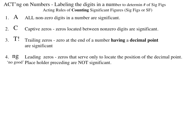C stands for captive zeros. Zeros located between non-zero digits are significant. Trailing zeros are significant if the number contains a decimal point. And leading zeros are not significant, and we can give them the letter NG.